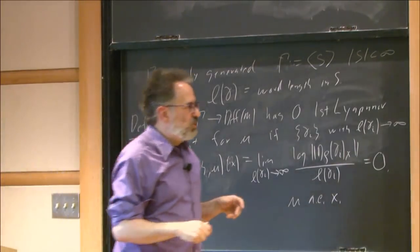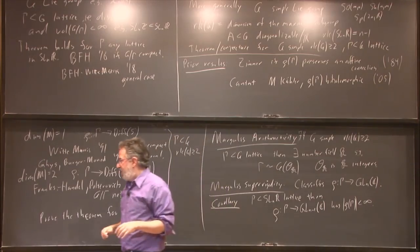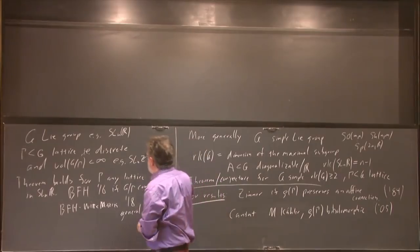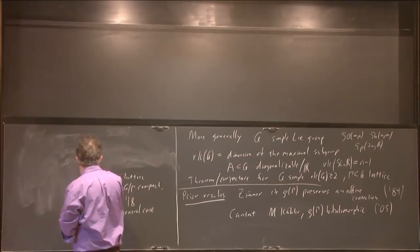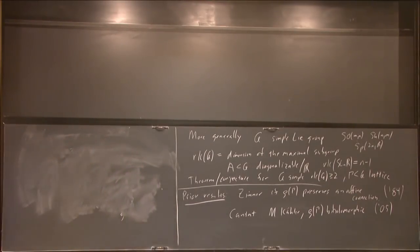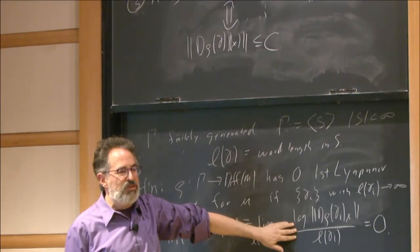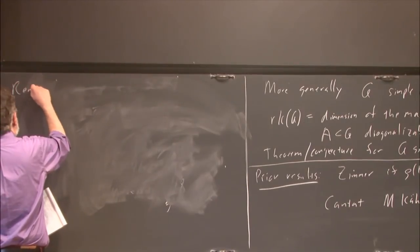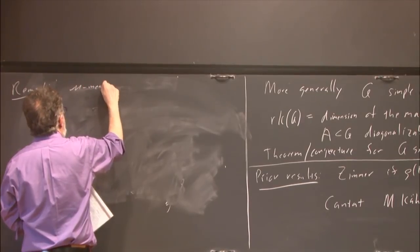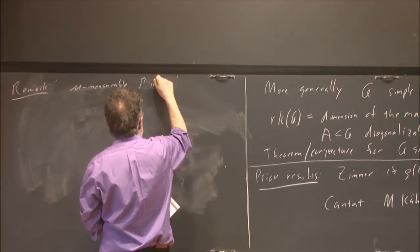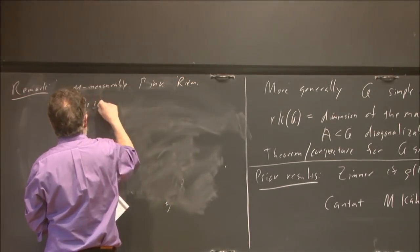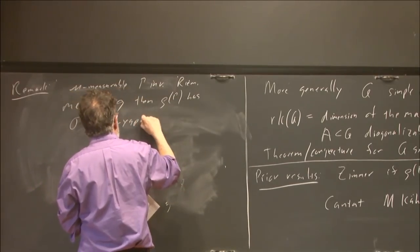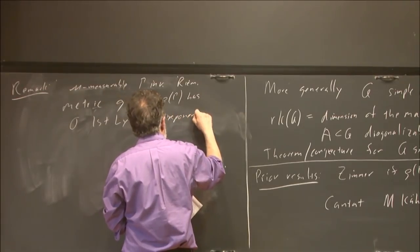That's a property a group action might have. I said that if the derivatives were bounded, we knew we were OK. This is saying: well, the derivatives aren't bounded, but they at least don't grow exponentially. That's going to turn out to be a key notion. There's an additional remark: if I have a mu-measurable, Gamma-invariant Riemannian metric G, then rho of Gamma has zero first Lyapunov exponent. This remark is actually due to Hillel Furstenberg. It connects things up: Zimmer proves we have that measurable metric, which implies this dynamical condition.